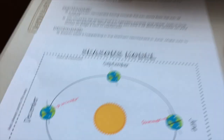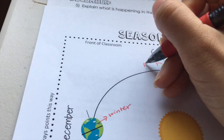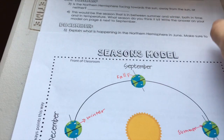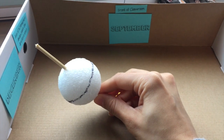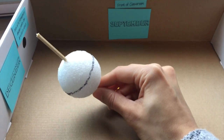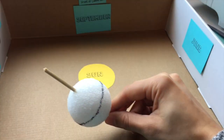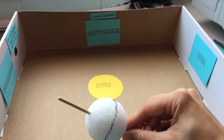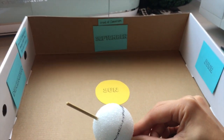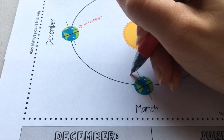Students can come to their diagrams and label fall there. When you get back to December the second time, do the same thing as June — having students talk through the whole process and what's happening in the southern hemisphere. When you get to March, they'll do the same thing they did at September: the northern hemisphere is not pointing towards or away from the Sun, it's neither, and both hemispheres are getting equal amounts of light. Students will see that this is spring and write spring on their diagram.